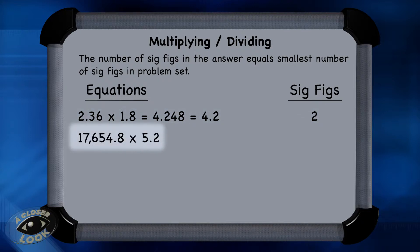17,654.8 times 5.2. Since 5.2 has only two sig figs, and the other number has six sig figs, the final answer must be rounded from 91,804.96 to 92,000 to get to two sig figs. And notice the trailing zeros without a decimal don't count.